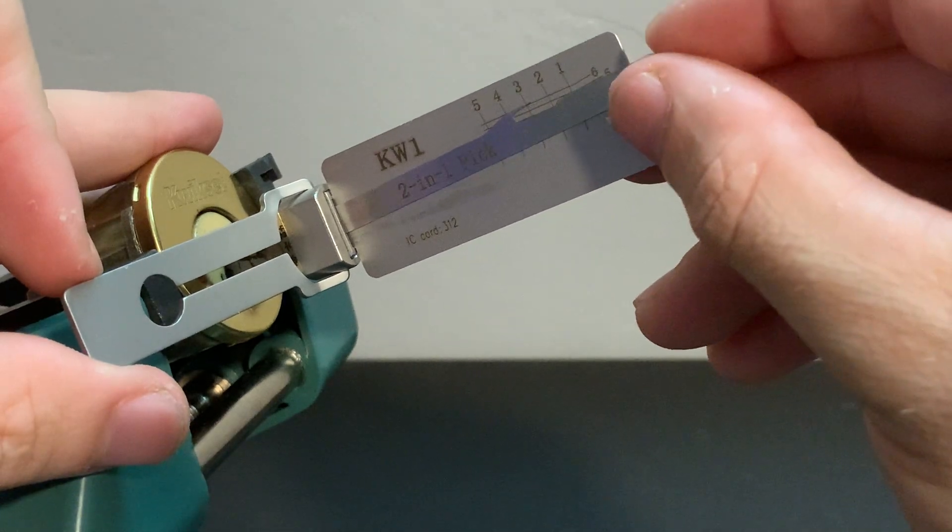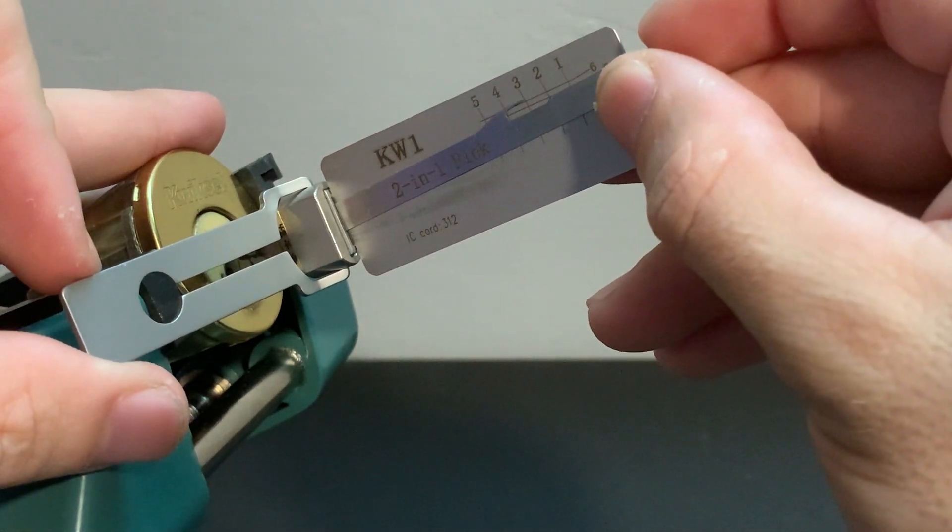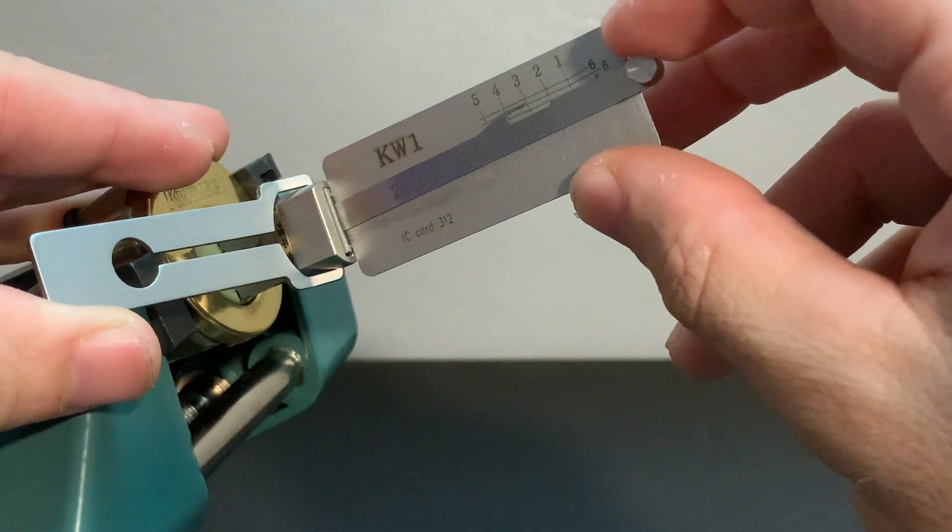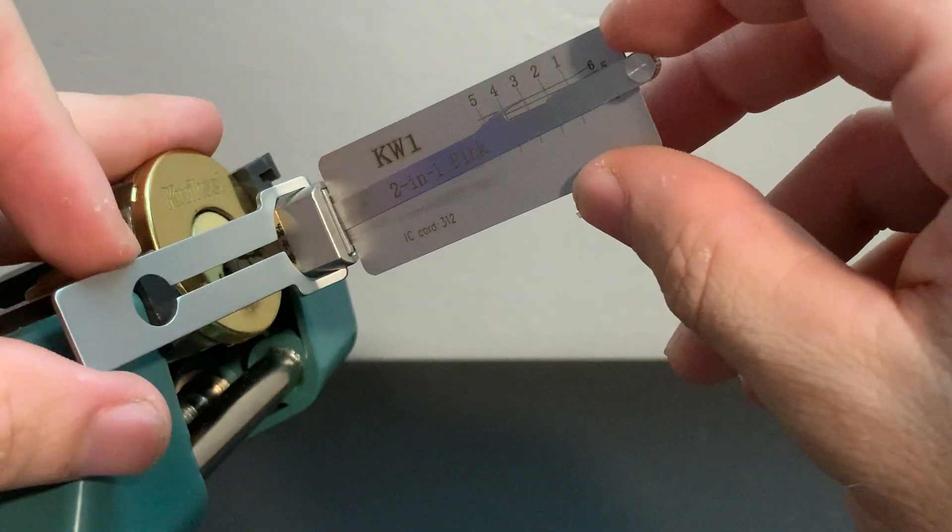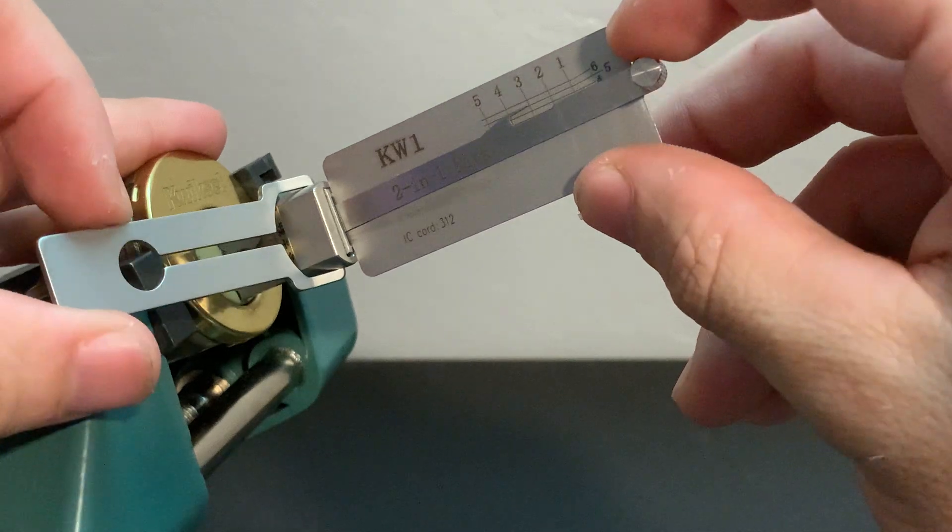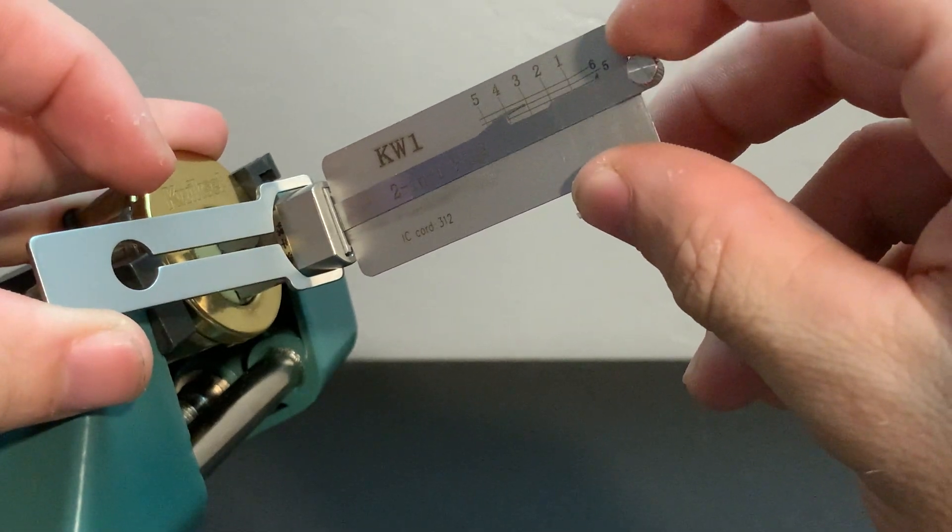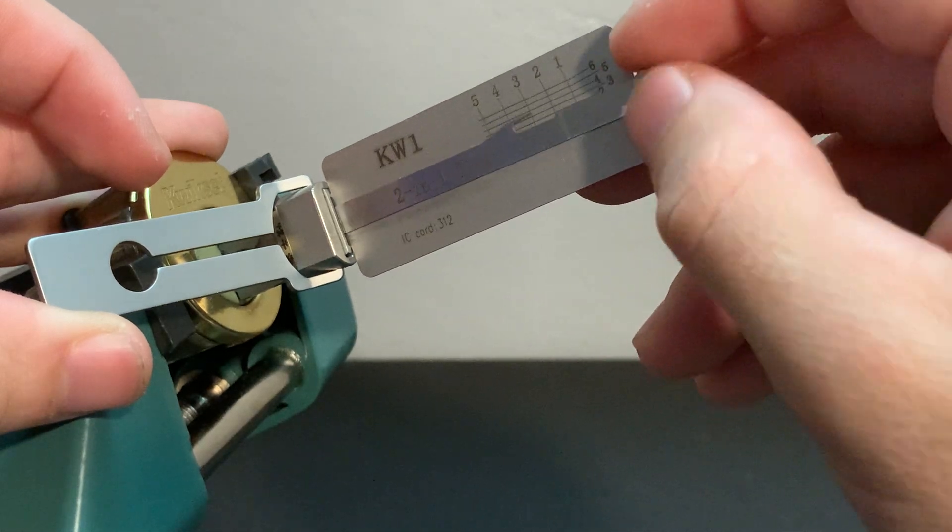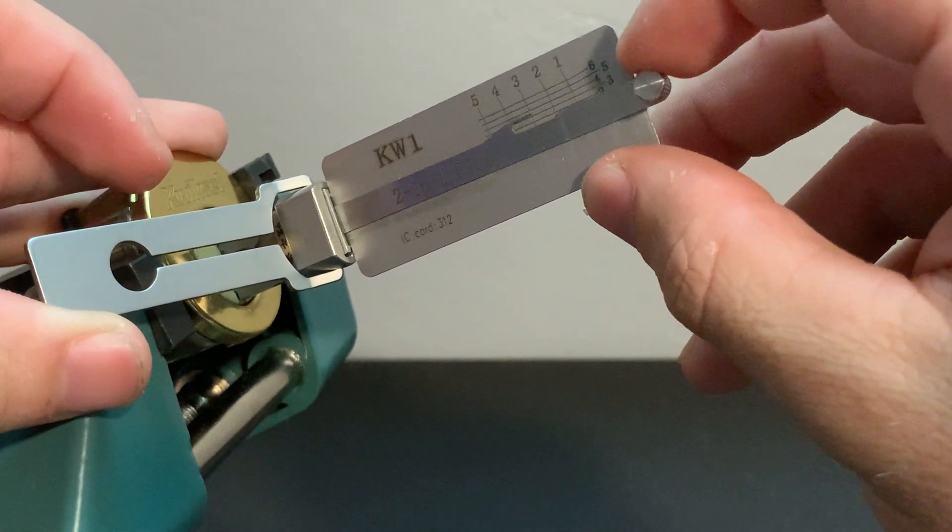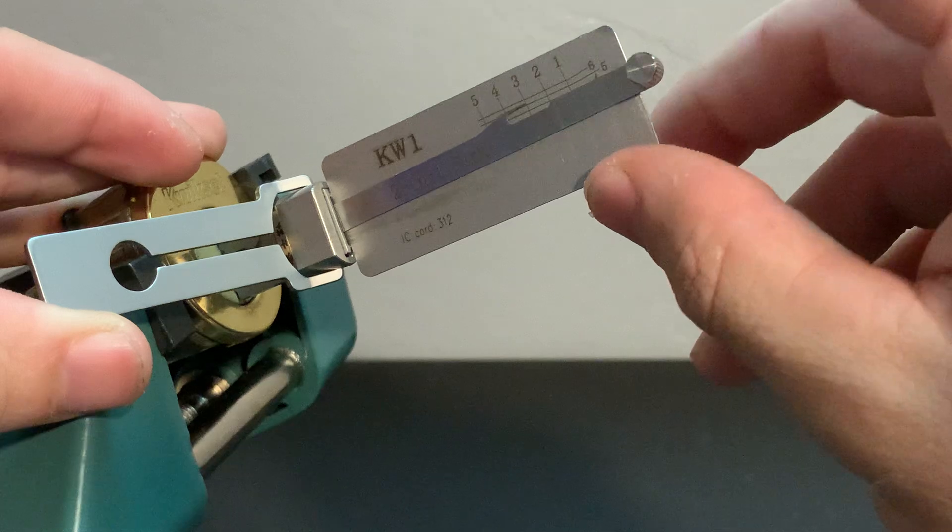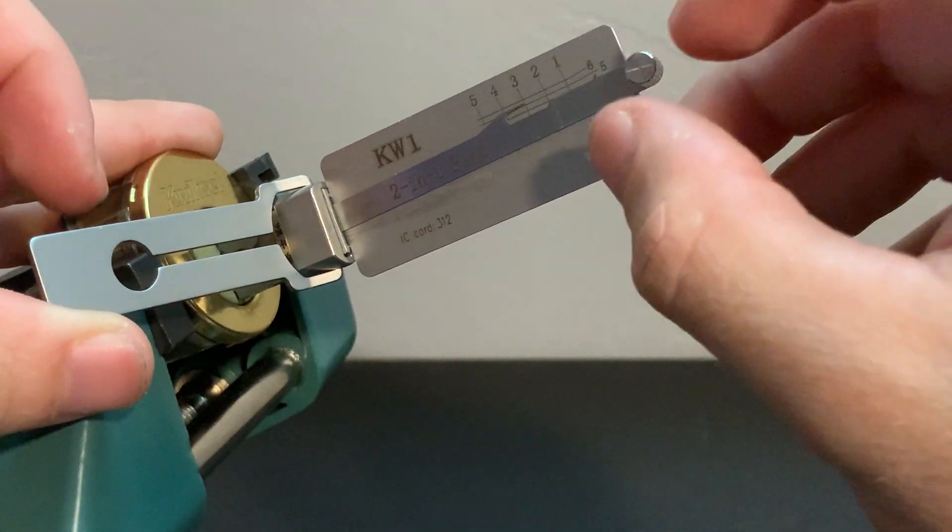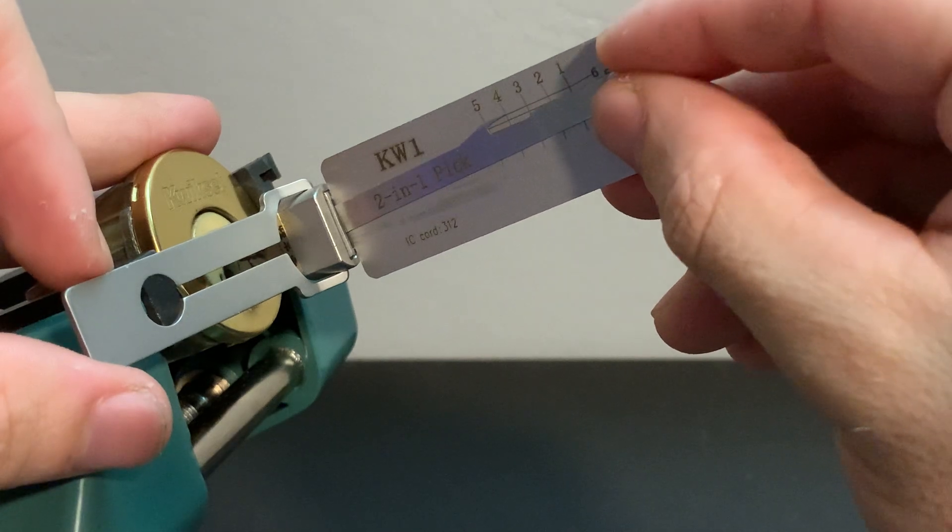We'll reset, slide to Chamber 3, Depth 6. Apply heavy tension. Not a lot of movement. Reset, go to 5. Lot of movement, that's a lot of play there. So I'm going to call that one a 5. So our cuts now are 5, 4, 5 on our first three chambers.